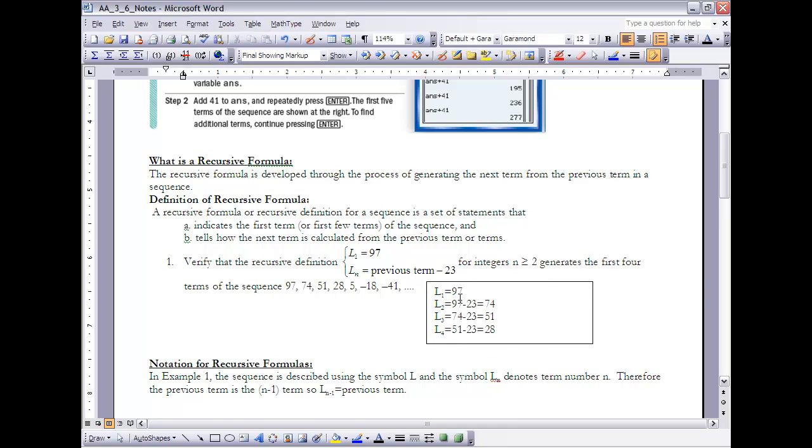The first term of the sequence is 97. That's given in the definition. Therefore, it would make sense that that would be my first term. Now, to get the second term, I'm going to take the previous term. Well, the second term is when n is 2, therefore the previous term is when n is 1. So I'm going to take 97 minus 23, which is 74, exactly what we have here.